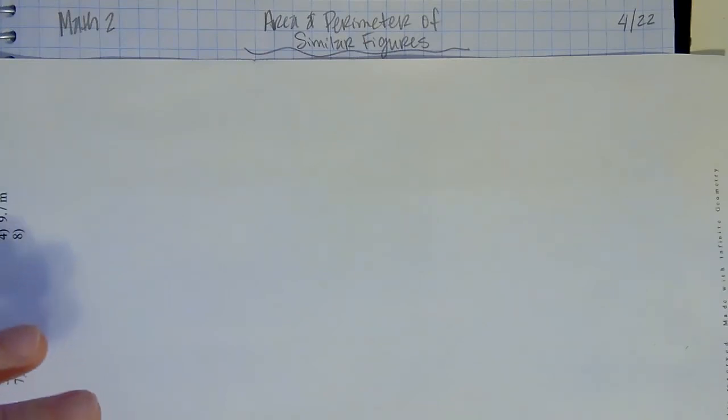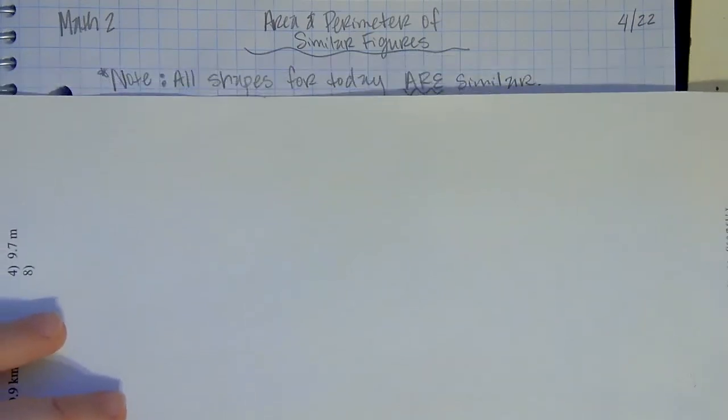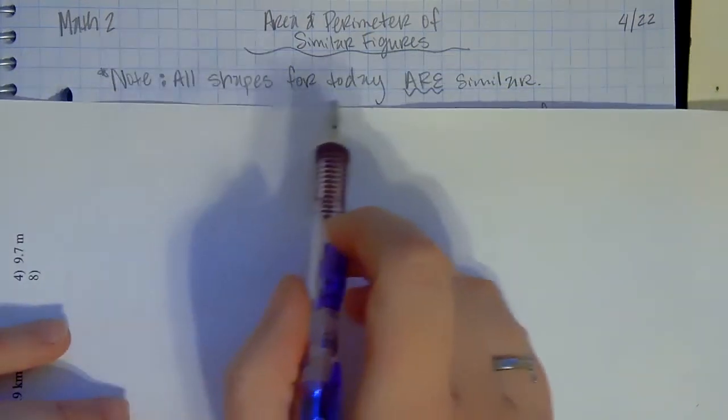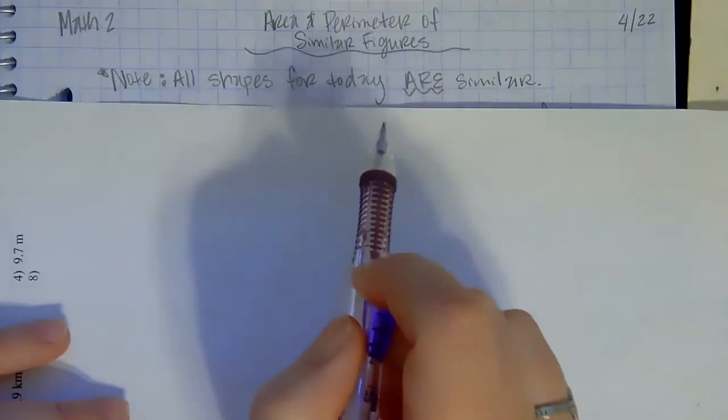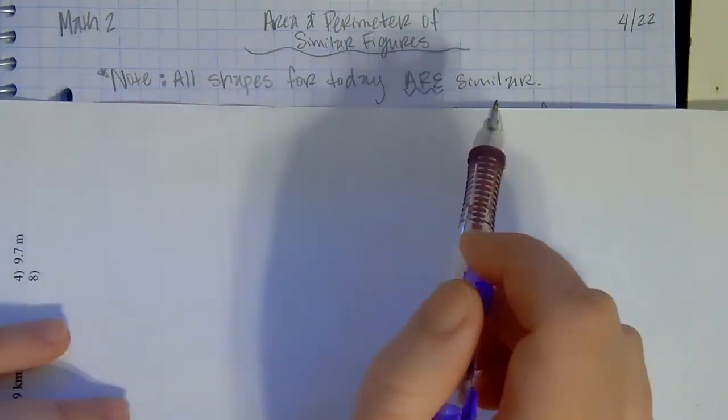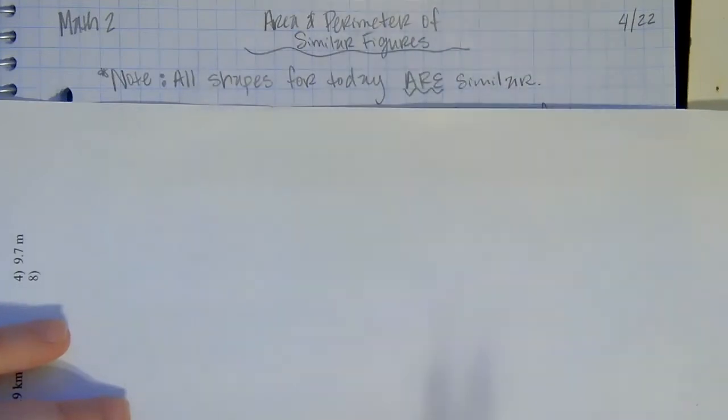Some things that you should know about the area and perimeter of similar figures: first of all, just so that you know, all the shapes that we're going to talk about today on the lesson and also in your homework are already all similar, otherwise we wouldn't be able to do anything.